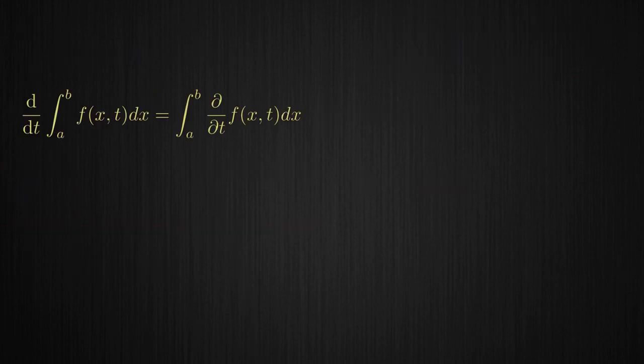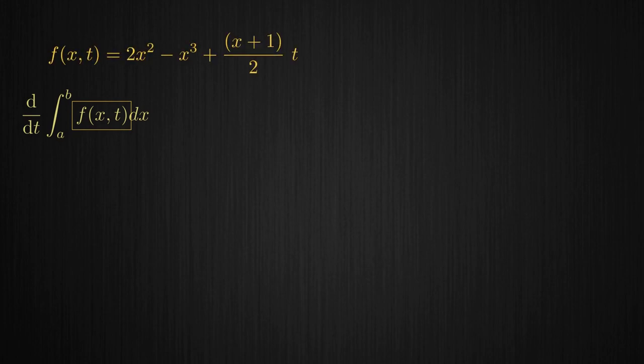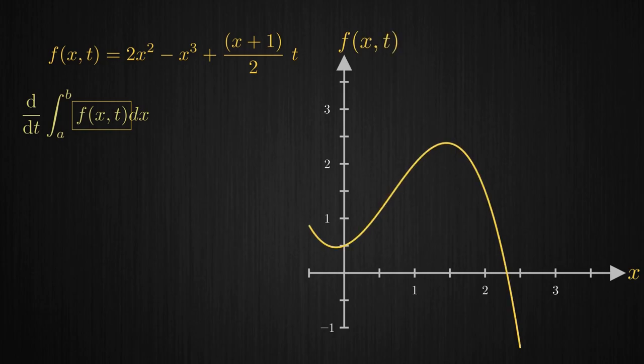Getting back to the Leibniz rule, focus on what the left hand side of the equation conveys. We have a function f of two variables x and t and let's say it happens to be this expression. You can think of f(x,t) as the function f(x) itself changing with respect to the variable t.